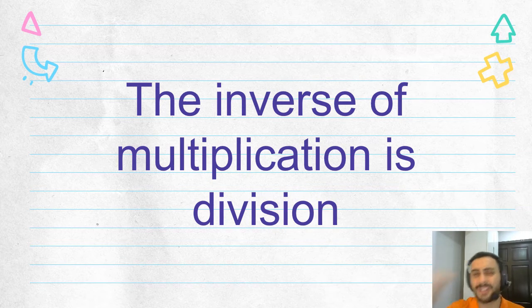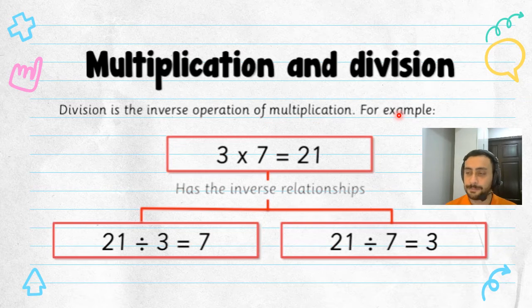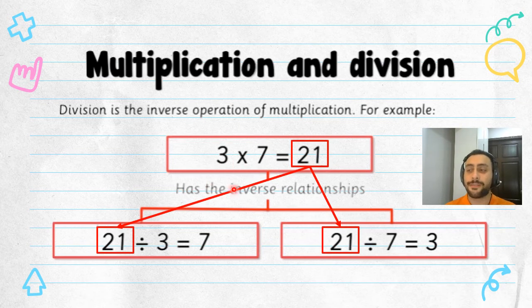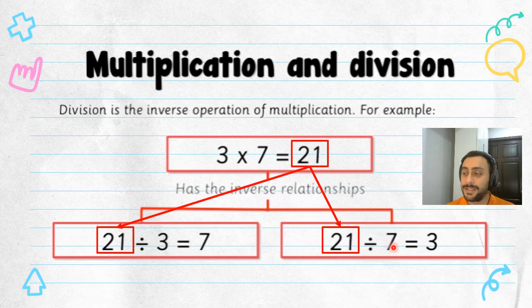Let me show you. Multiplication and division — division is the inverse operation of multiplication. For example, let's imagine three times seven equals what? 21, right? Pretty easy. So three times seven equals 21. Now it has the inverse relationship with these two: 21 divided by three equals seven, or 21 divided by seven equals three. You see, these are related. They have a relationship together.